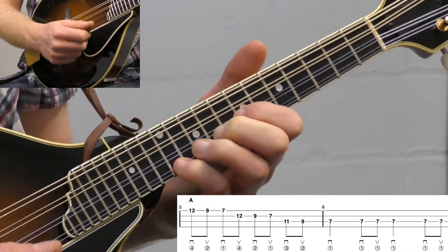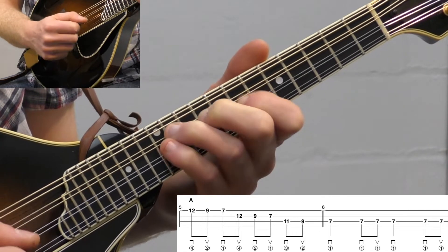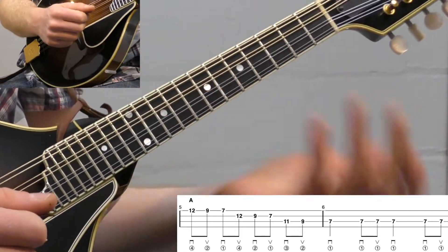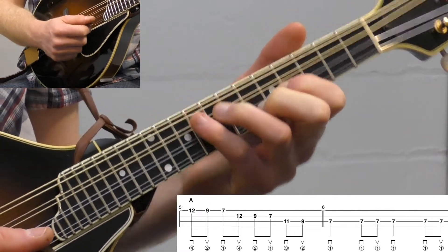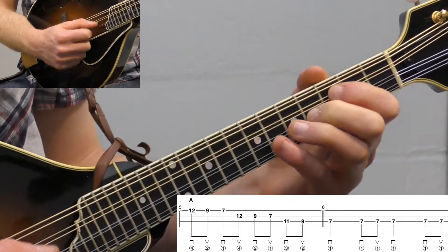Another spot you could use it is if we move it up to A. So go up to the 12th fret with your pinky to start. It's like the B part to Salt Creek. So if you know that fiddle tune in the key of A, normally the melody is right like...